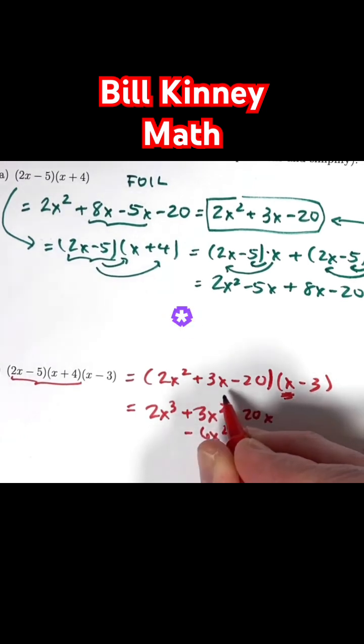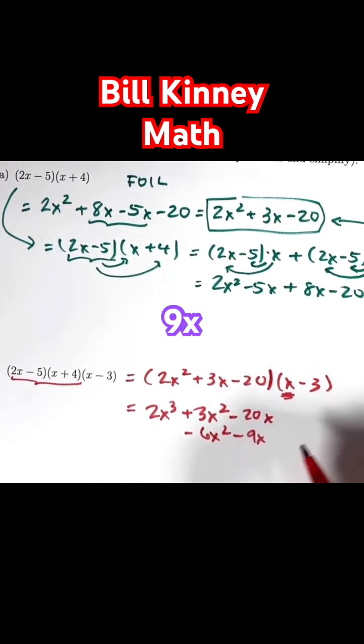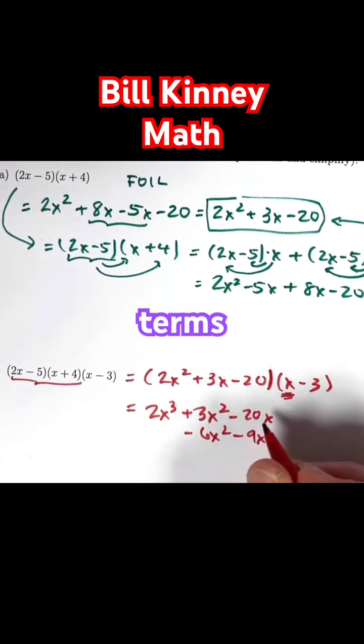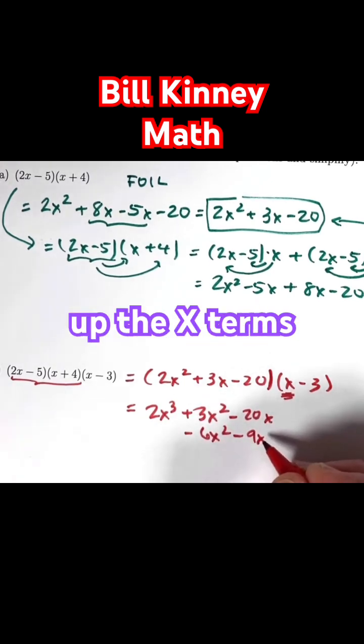Negative 3 times 3x is minus 9x. Putting the x squared terms lined up vertically and lining up the x terms vertically.